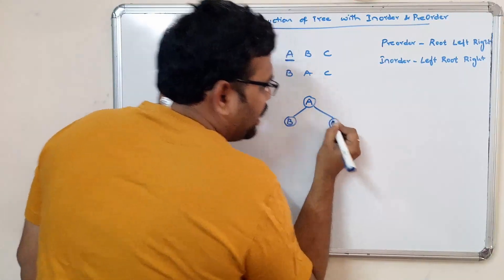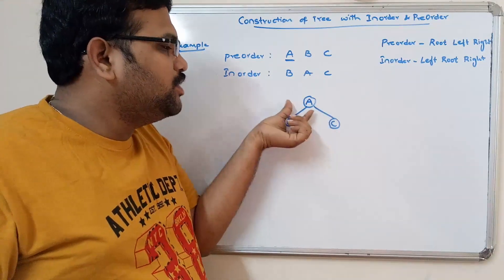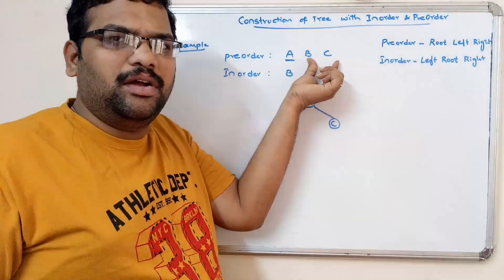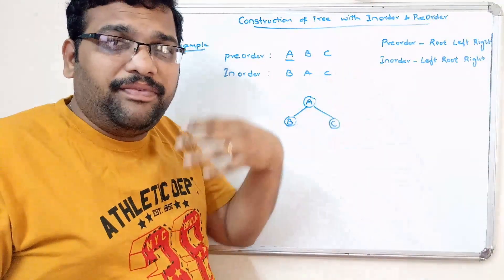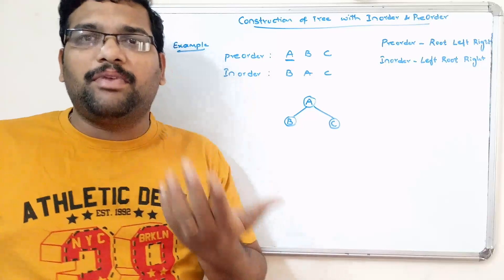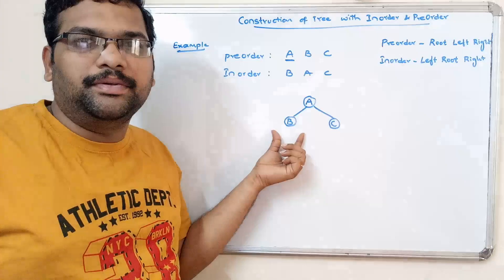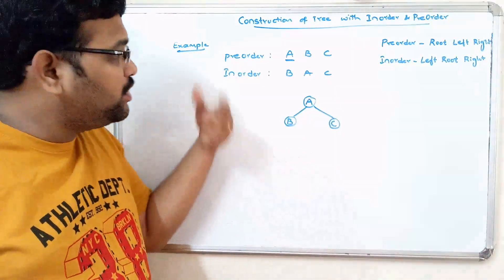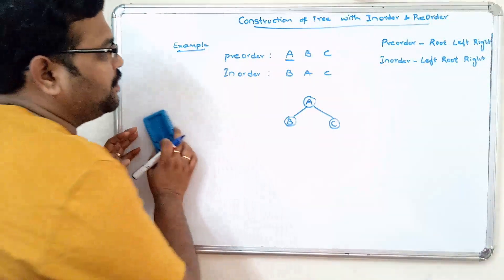With the help of in-order we determine which is the left child and which is the right child. Here there are only two nodes — one is left and another is right. If the traversals have more elements, then we use in-order to find the next root. Let us take one more example with more than three elements so that you will understand clearly.